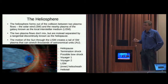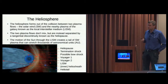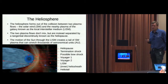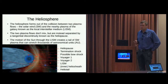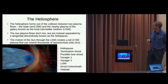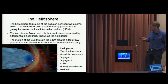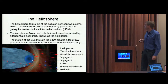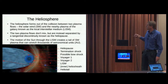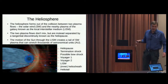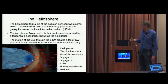So as I said, I'm going to talk about the heliosphere. The way we sort of divide up the work and the development is that Nick focuses mostly on the MHD side of things, and I focus on the neutral particles that sort of couple to the plasma. The heliosphere forms out of the collision between two plasma flows: the first is the solar wind, and the second is the plasma in the nearby part of the galaxy where the solar system is.